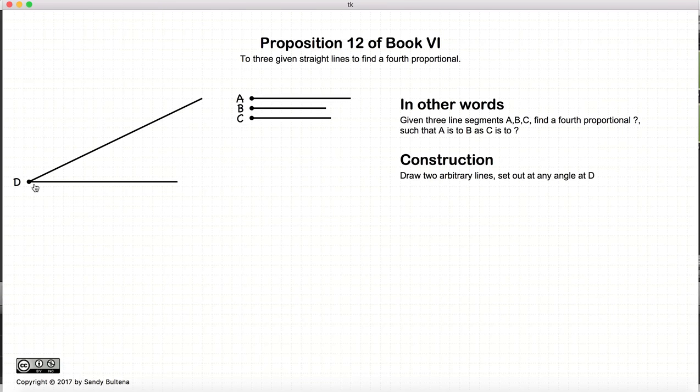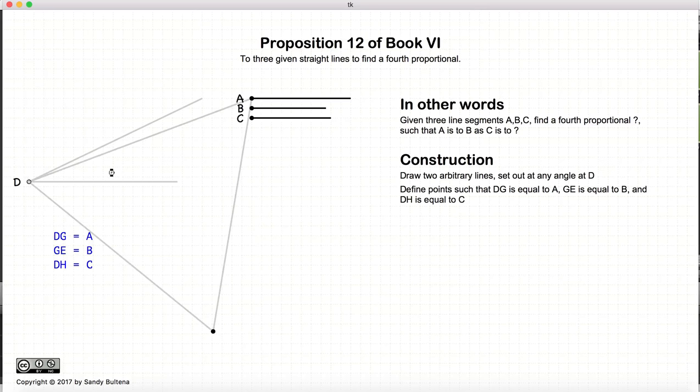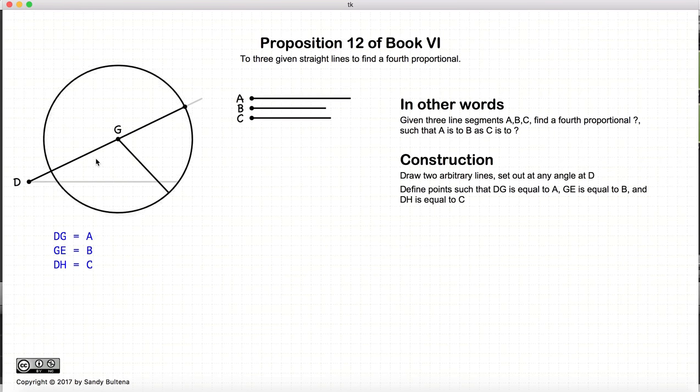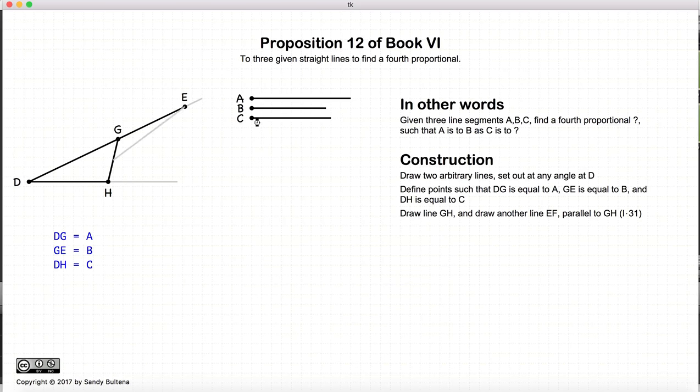So we start with two arbitrary lines starting at point D, arbitrary length, arbitrary angle, doesn't matter. Now we take these two lines and we cut off segments such that DG is equal to the magnitude of A, GE is equal to the magnitude of B, and DH is equal to the magnitude of C. And we draw the line GH, and now we draw a line parallel to GH through the point E.